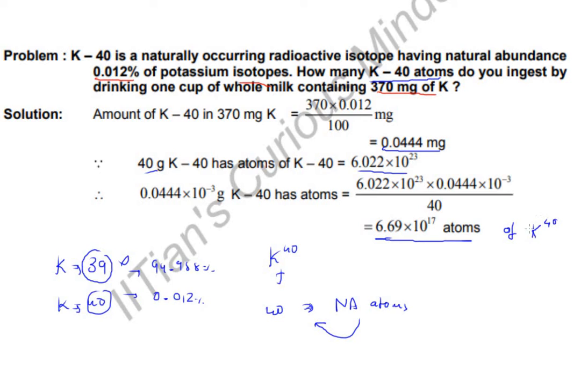So these many atoms of K-40, a special isotope, we ingest by drinking one cup of milk containing 370 mg of K. Hope you guys understood the video. Thanks for watching.